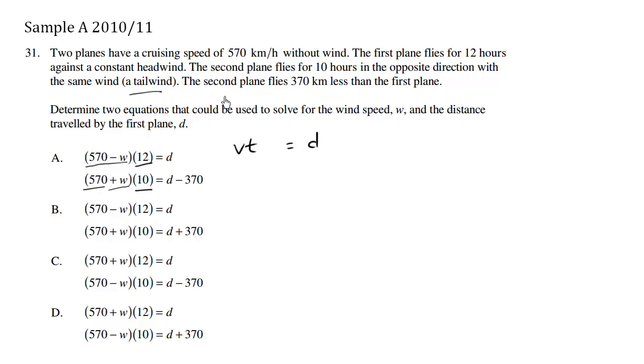Now it says here the second plane flies 370 km less than the first plane. So that's why distance here is subtracted. We subtract 370 from the distance. So choice A is correct.